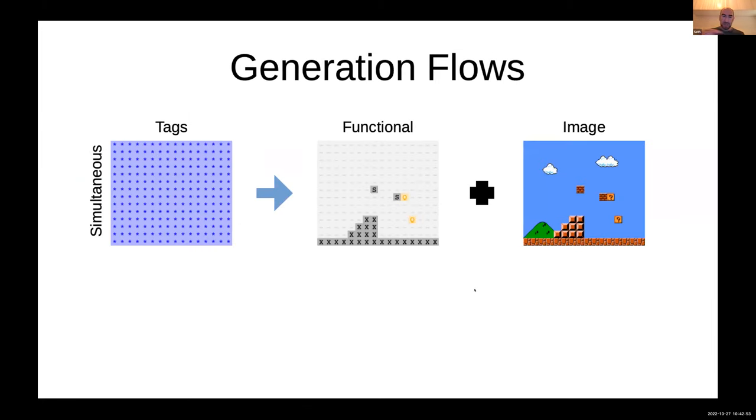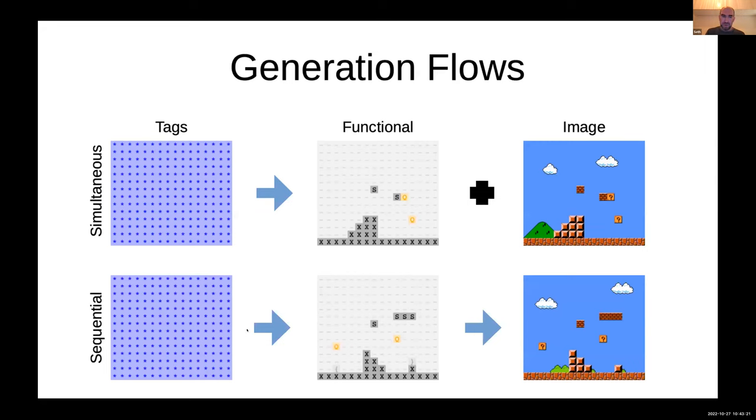The system also supports basically two flows through what I call tags, which specify what tiles you can put in certain locations. There's a simultaneous flow where it generates both the functional level and the image for the level as well. The functionality of the tiles, like whether they're solid or not solid or a question mark block, and then what they actually look like. You can also do it in a two-step sequential pass where you generate the functional level first, and then that limits what tiles you can place to generate the image level.